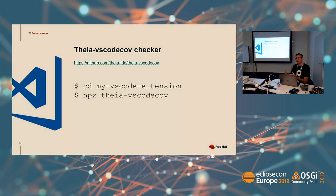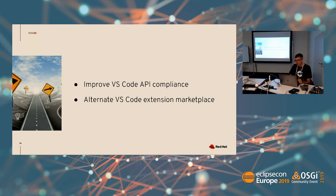You have another tool — the VS Code compatibility checker. You clone this tool, go inside your VS Code extension, run this tool, and it will tell you which APIs you are calling that are not already provisioned in your Theia instance. It's very easy to know if your VS Code extension may work or may not work at all inside Eclipse Che.